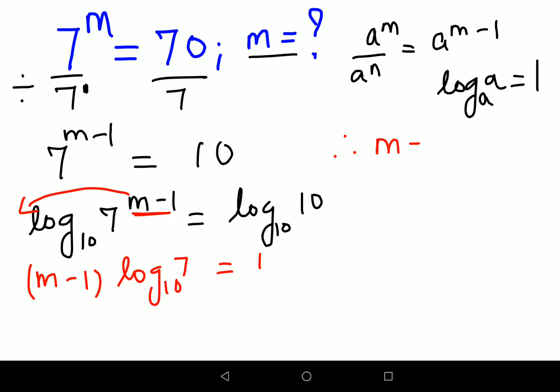Therefore, I can say m minus 1 is 1 upon log of 7 to the base 10.